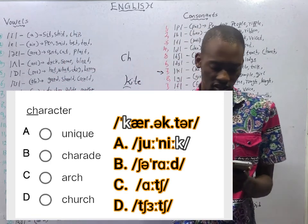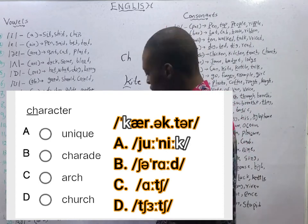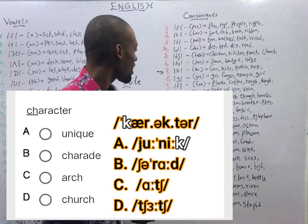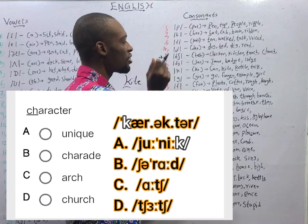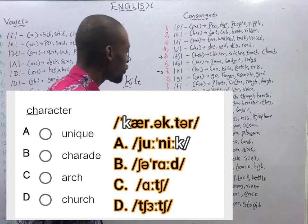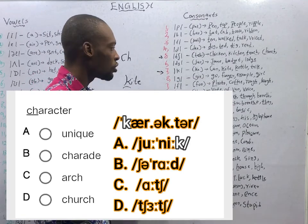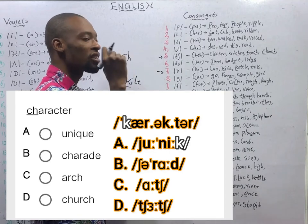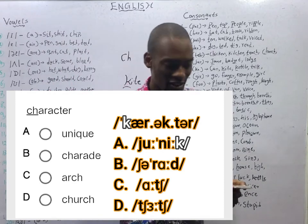Then we have 'ash.' Ash possesses the SH sound. Then 'church.' Church has the CH sound — the TCH sound as in 'chicken.' Don't confuse the SH and the CH sound. SH is as in 'should,' while CH is the TCH sound as in 'chicken,' 'kitchen,' 'church.' So I hope you found that understandable.